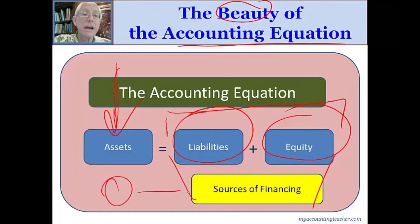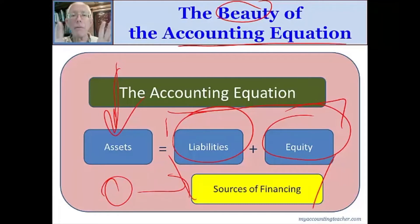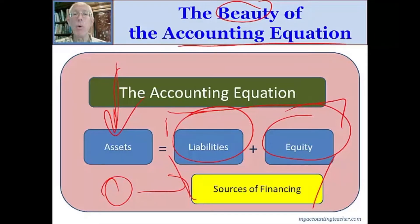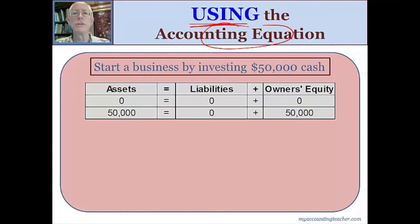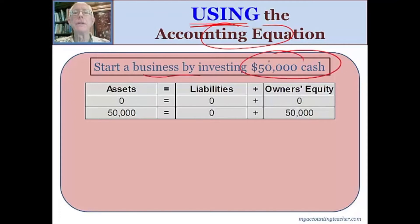If I've got assets, I have to have money to buy those assets. This simple insight is going to provide a powerful framework that will allow us to analyze complexity, stay organized, and see the essence of what's going on in a business. The accounting equation is great — let's use this beautiful thing. Let's analyze some transactions. I start a business by investing $50,000 cash.